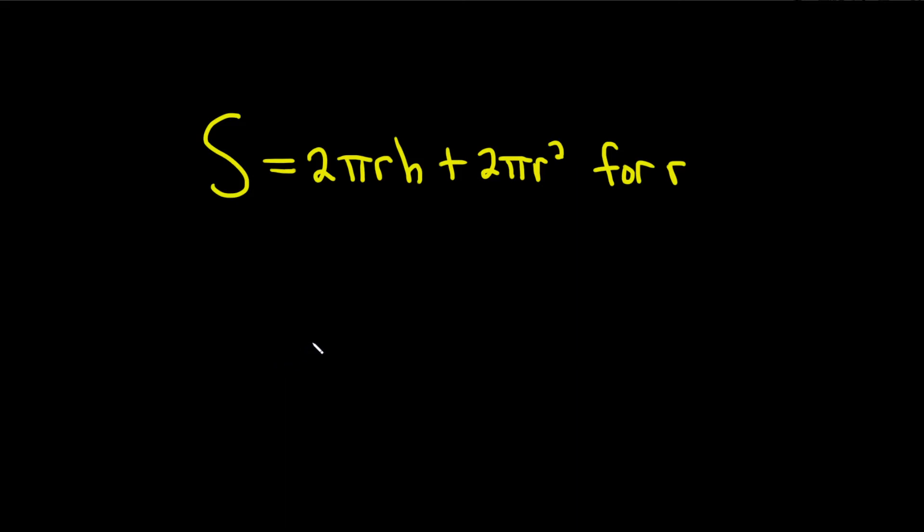So we have this equation and we're being asked to solve it for r. This is a quadratic equation in r because we have an r here and we have an r squared here. So what we'll do is we'll set it equal to 0 and attempt to use the quadratic formula.